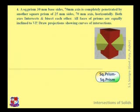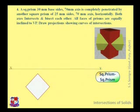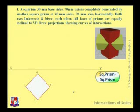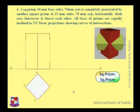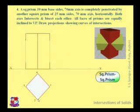To draw its front view and top view, draw the XY line representing the intersection of HP and VP, and draw the top view of the given square prism. It would be a square such that all sides make an angle of 45 degrees with the XY line. Name the end points 1, 2, 3, and 4. Draw vertical lines from all these end points and draw its front view — it would appear as a rectangle where face 1-2 would be visible in the front view, shown by a full line.